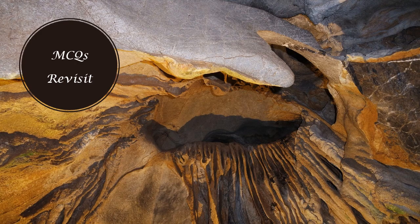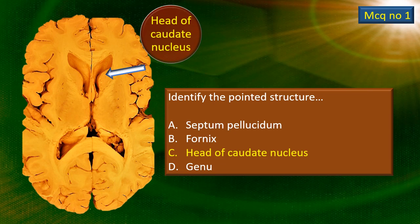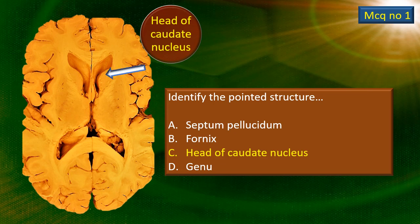Now let's revisit the MCQs in the light of what we have understood. MCQ number 1 — the arrow is referring to the head of the caudate nucleus. The septum pellucidum is right in the midline, so this cannot be the septum pellucidum. The fornix is right at the posterior end of the septum pellucidum, and on either side you can see the bulge. The genu is much further away — it forms the anterior boundary. Therefore, the most appropriate answer is the head of the caudate nucleus.